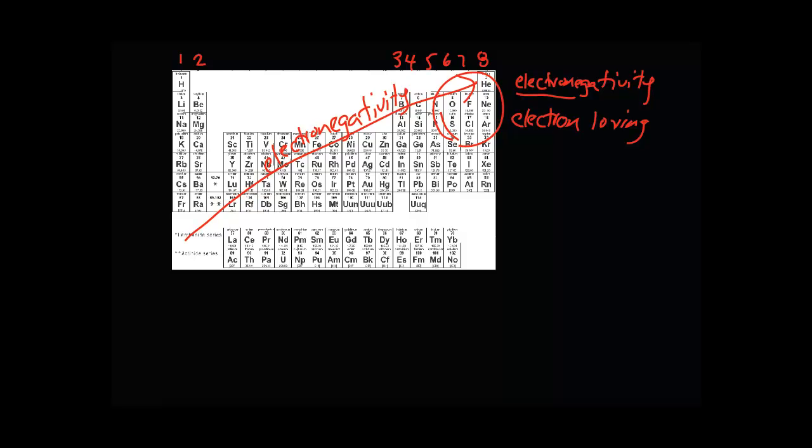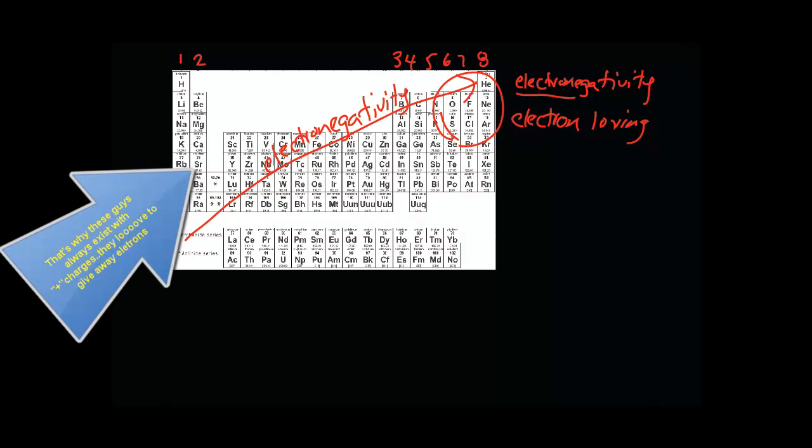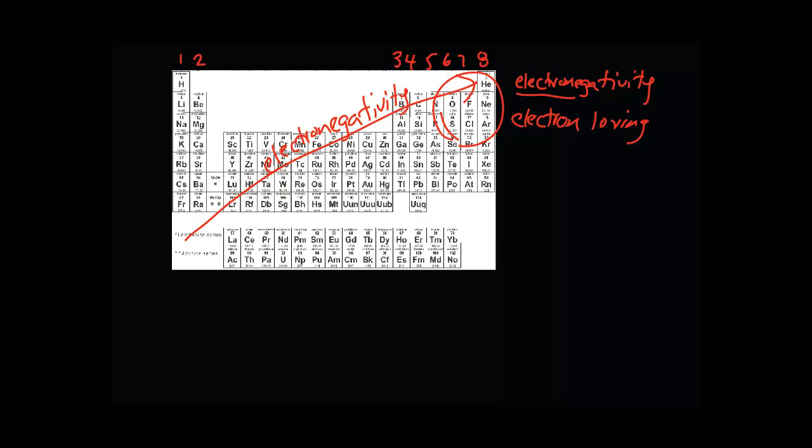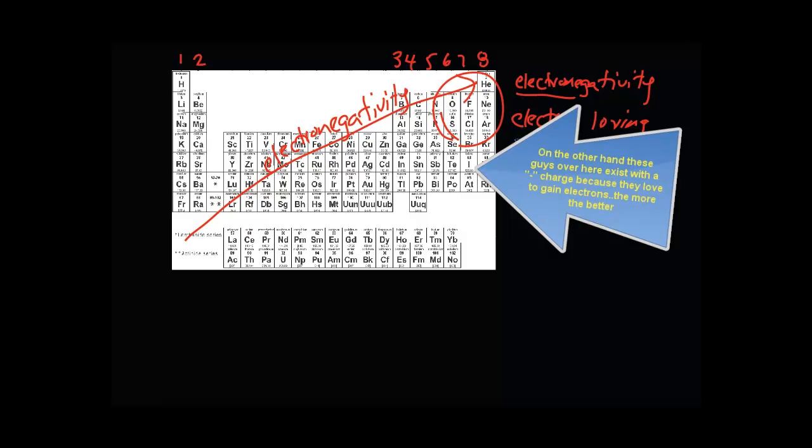The less electronegative elements in the bottom left aren't as electron loving, so it's easier for them to donate their 1, 2, or 3 valence electrons. Electronegativity increases from bottom left to top right, and it becomes more difficult to pluck off those outermost electrons because electronegativity means electron loving.